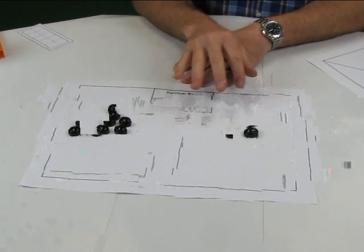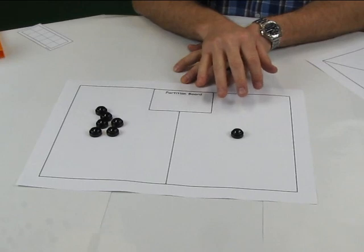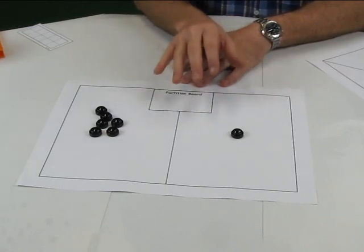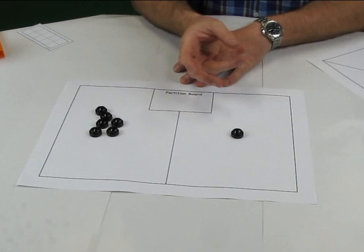I might point out as I'm moving around the room that six and one and one and six both make seven. That's the commutative property of addition, which fits in the understanding part of the Australian curriculum for mathematics.